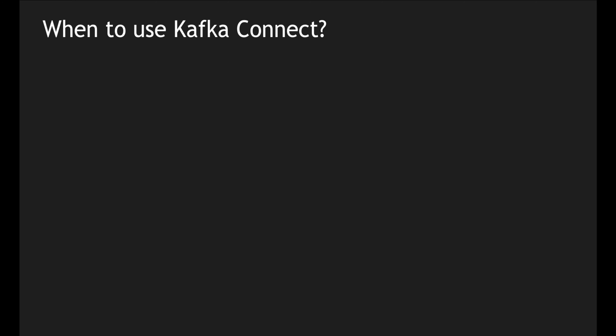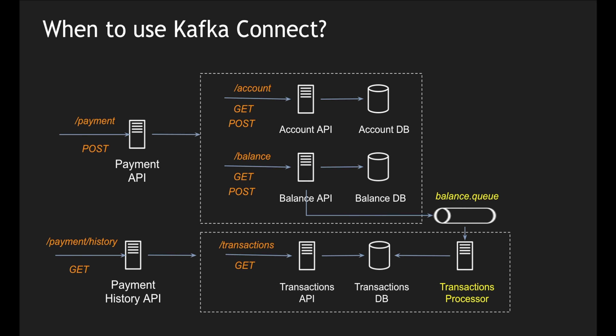To understand when to use Kafka Connect, let's look at a payment interface example. There can be multiple APIs which the payment gateway connects to — for example, APIs specific to accounts and balances, and transactions which have payment history information. These are different databases and different systems which have their own data models, with different fields, tables, and databases.